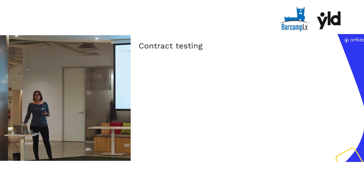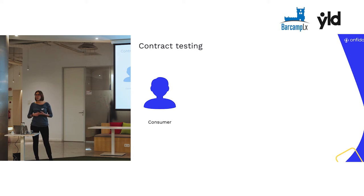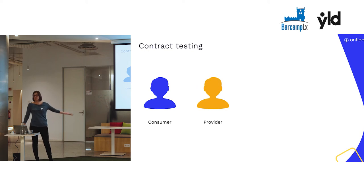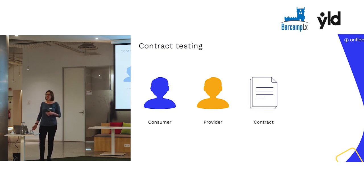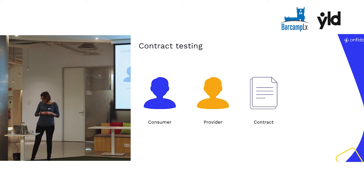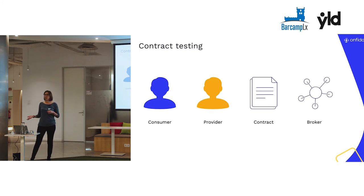In contract testing, we have a couple of key roles. The first one is the consumer — the service that initiates the HTTP request. The request is sent to the provider, and the provider is responsible to respond to it. The contract is a set of interactions composed of request-response pairs between the two services. And the broker is where the contract is stored, which can be a generic asset server or a version-controlled system.